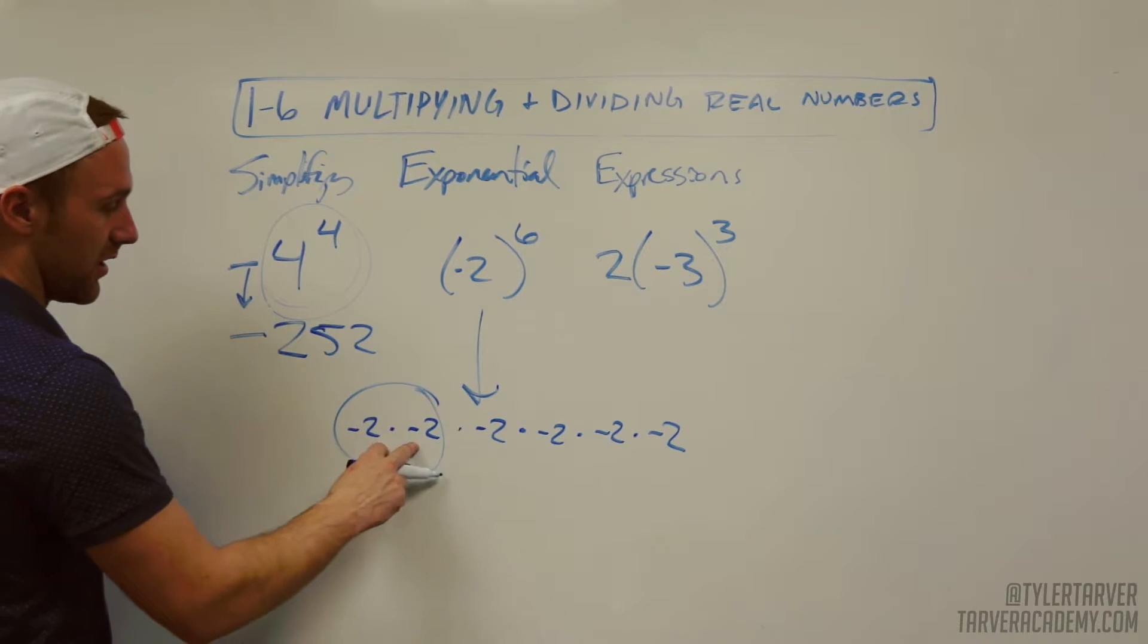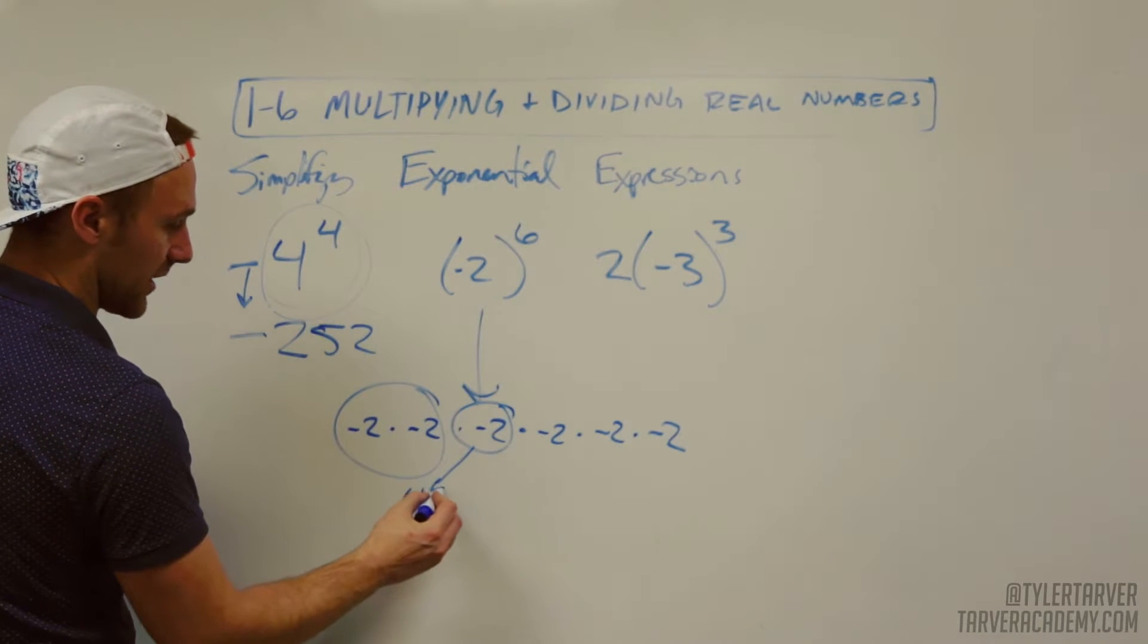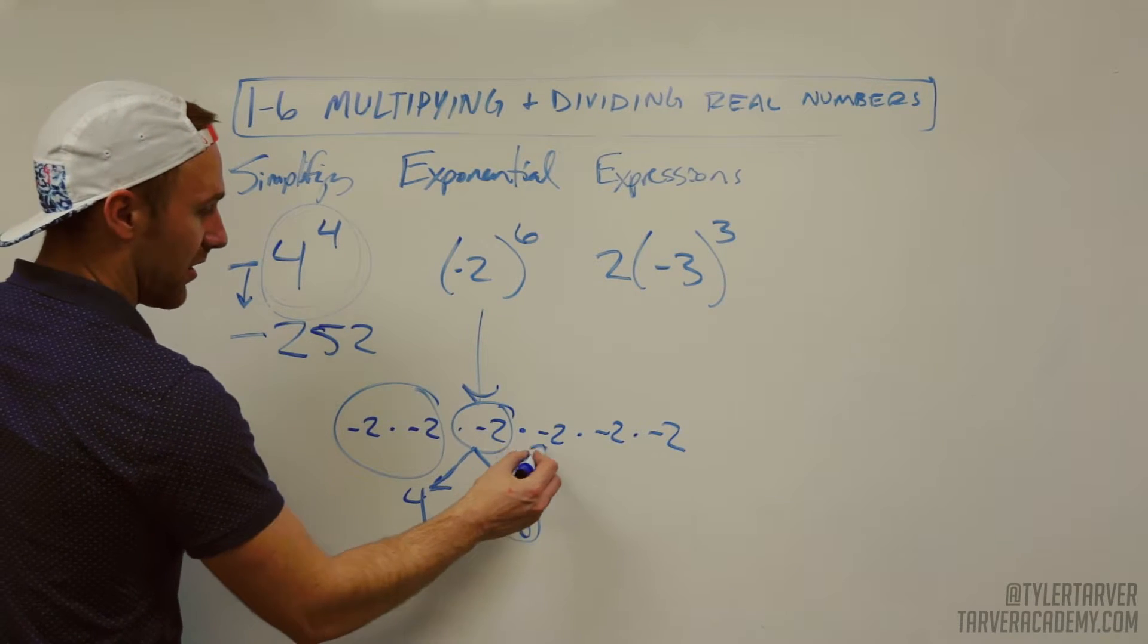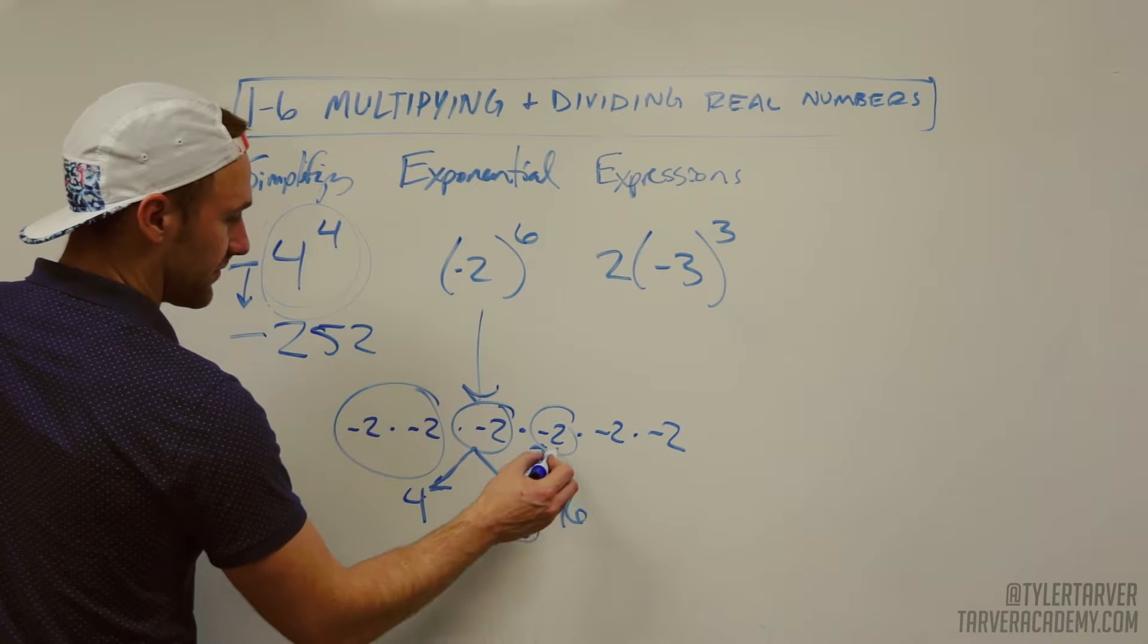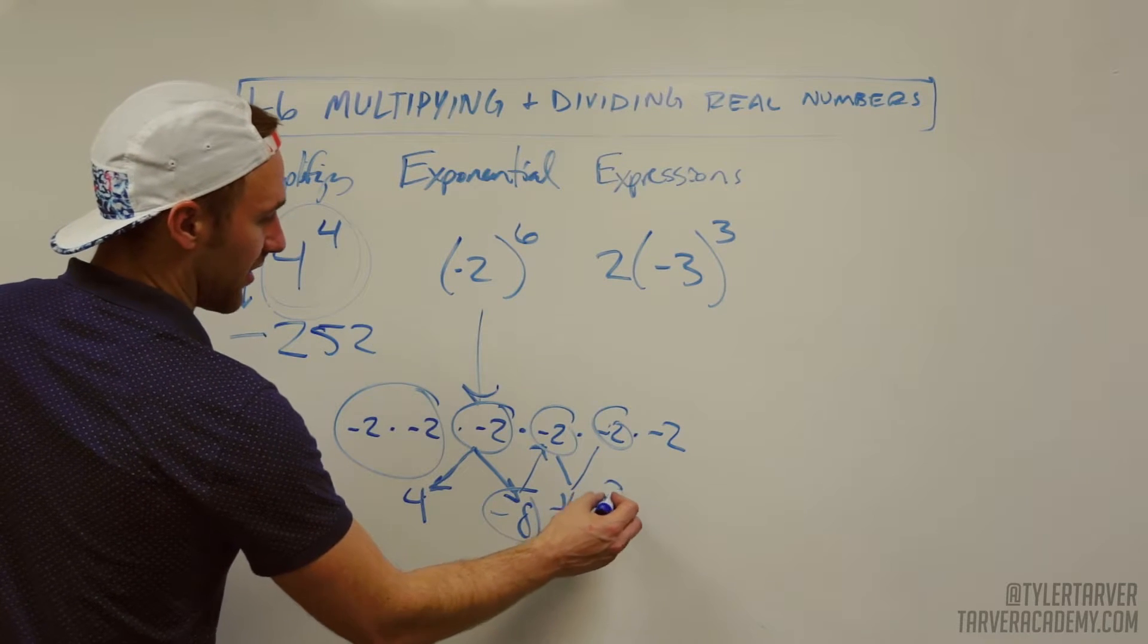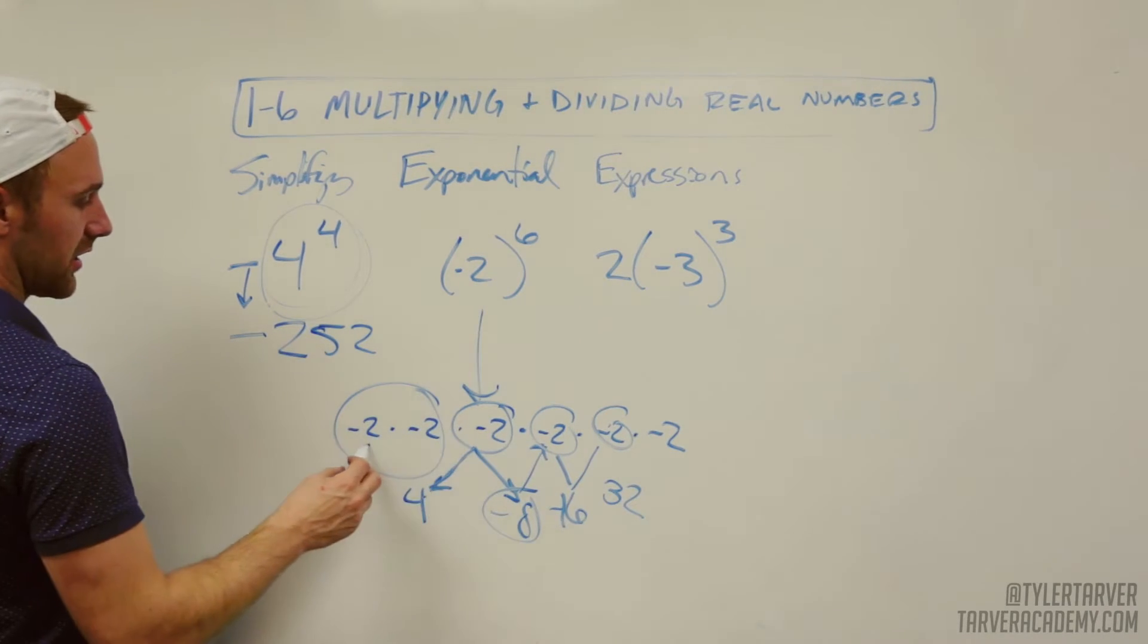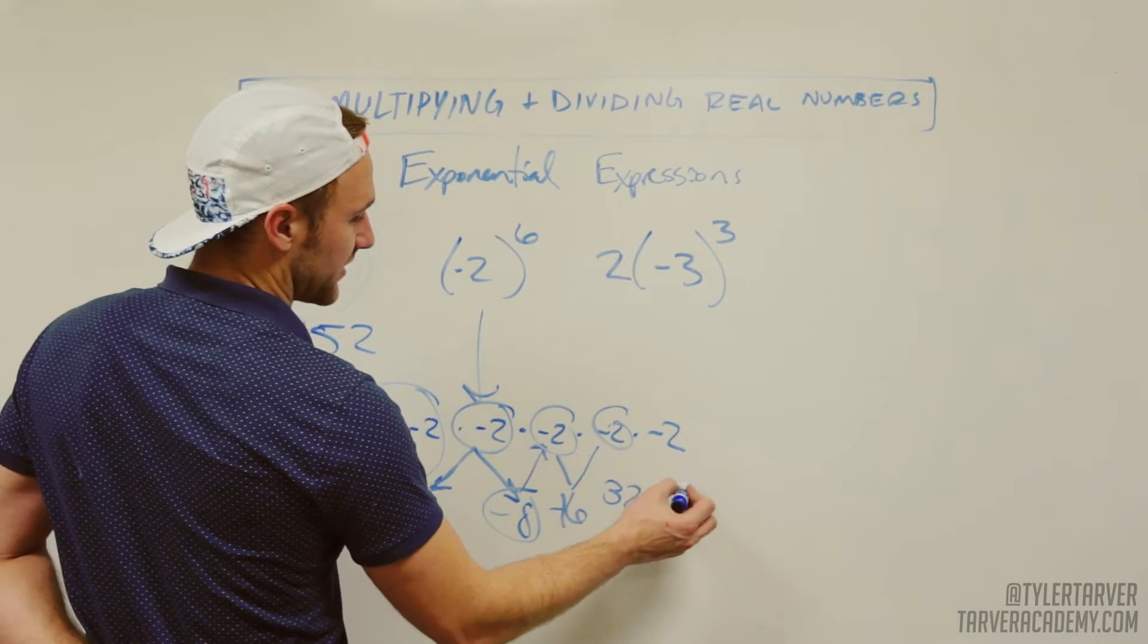So let's do the first two. That's negative two times negative two is positive four. Now I'm multiplying that times negative two is negative eight. And I'm going to go up here. Negative eight times negative two is negative 16. And then I'm going to go up here. Negative 16 times negative two is positive 32. I think I did something wrong. And then 16 times negative two is negative 64.